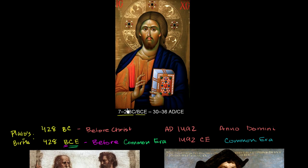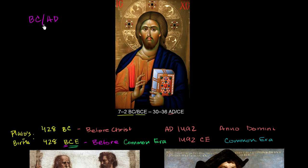Remember, BC is before Christ, which is a little ironic because we're talking about the actual birth of Christ. BCE is before the common era. Some people don't like the BC/AD naming mechanism because it's explicitly referring to Christ, and every year it makes Christ the central figure in all of history. So they'll say this is clearly too Christian, and they would prefer the less Christian naming scheme using BCE and CE.